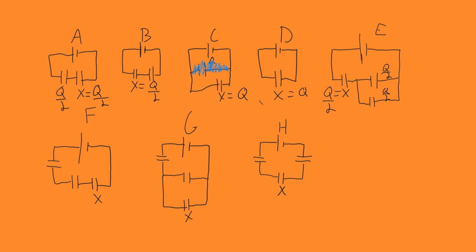Moving on to F: we have three capacitors in series, which means the charge is going to be split up amongst the three of them, giving Q over 3. G is exactly the same as E — drawn a little differently, but those two capacitors are in parallel and this one is in series, so this is going to be Q over 2. Moving over to H, again we have three capacitors in series, which means it's going to be Q over 3. So those are the charges on each capacitor. Take some time to organize them from largest to smallest — they will have different amounts of charge based on how many capacitors there are and whether they're in series or in parallel.